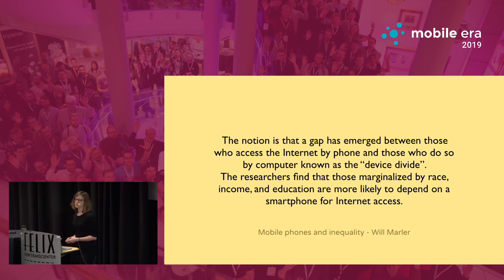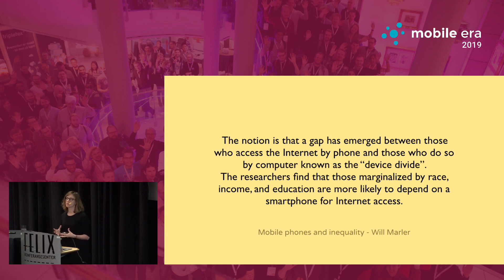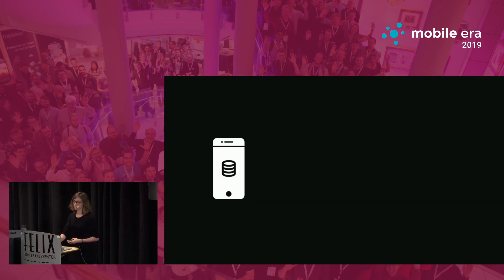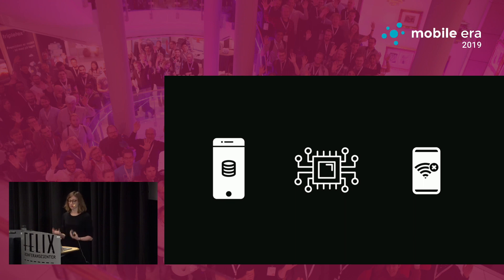But he also mentioned that there is a big gap between those who can access the internet only on their phone and those who can also access it on other devices like a desktop computer or tablet — the device divide. Those marginalized by race, income, and education are more likely to depend on smartphone internet access. Disadvantaged groups are really influenced by how much storage they have, how strong the processing power is, and whether they are offline or online — how the application deals with poor network connection and outages.